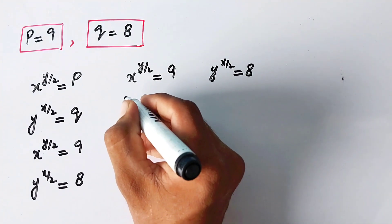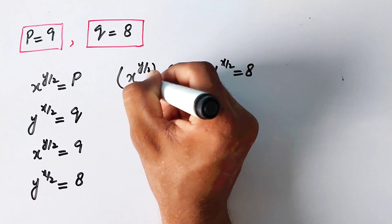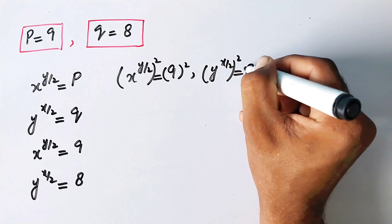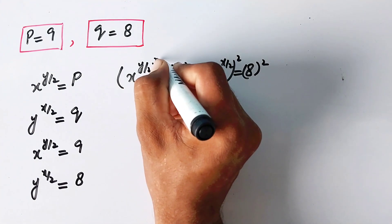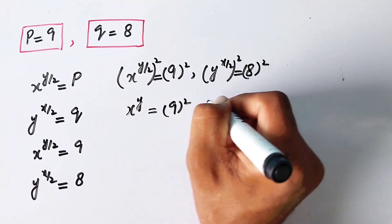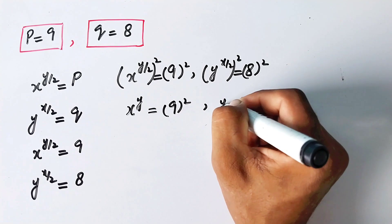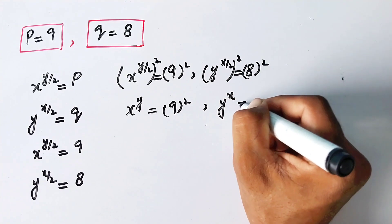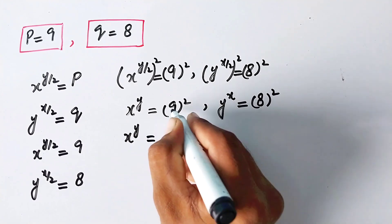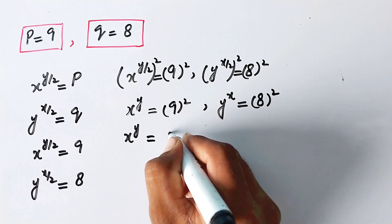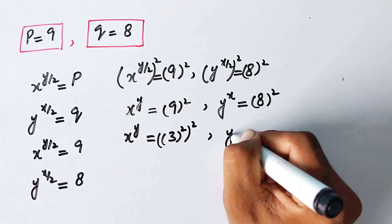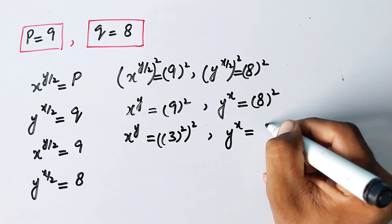Taking squares on both sides, the exponent of 2 and the square cancel each other, leaving x^y = 9² = 81 and y^x = 8² = 64.